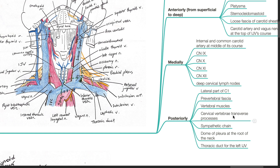Posterior to the IJV: the lateral part of C1, prevertebral fascia, vertebral muscles, cervical vertebrae, transverse processes, sympathetic chain, dome of the pleura at the root of the neck, and the thoracic duct for the left IJV.